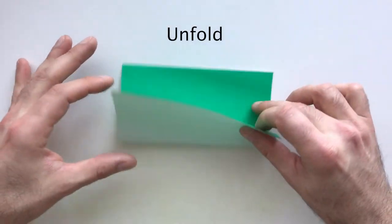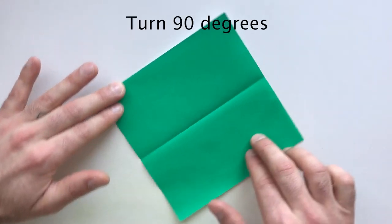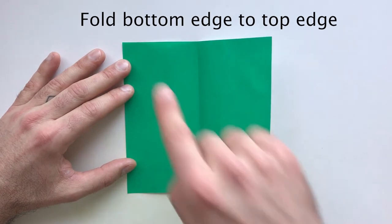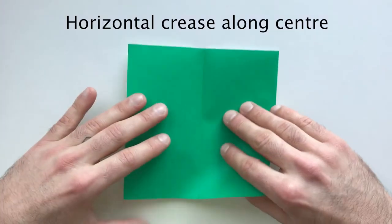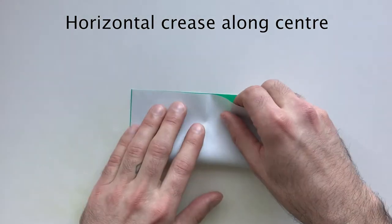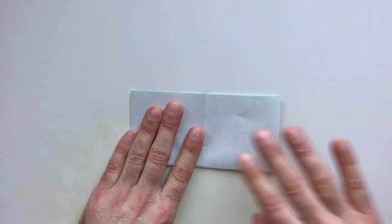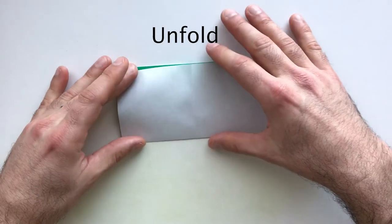Then unfold, turn 90 degrees, and fold this bottom edge to the top edge again, making a horizontal crease along the center of the paper. Unfold.